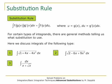The substitution rule for integration comes from the chain rule for differentiation, and it says that the integral of f(g(x)) times g'(x) dx equals the integral of f(u) du, where we have substituted u = g(x) and du = g'(x) dx. The aim in substitution is to find a substitution such that the resulting integral f(u) du is simpler than the original one.